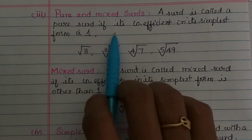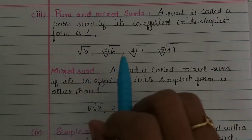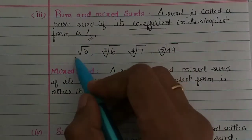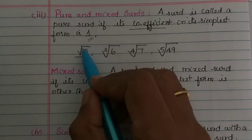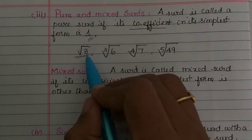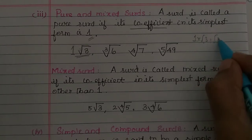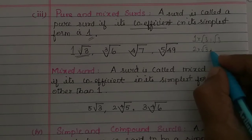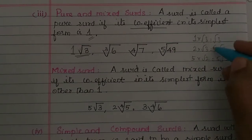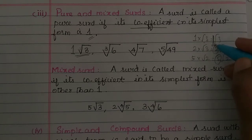A surd is called a pure surd if its coefficient in its simplest form is 1. For example, root 3 — the coefficient here is 1, meaning it is 1 times root 3. Similarly, 2 root 3 and 5 root 2 have coefficients 2 and 5 respectively. When the coefficient is 1, as in root 3, it is a pure surd.